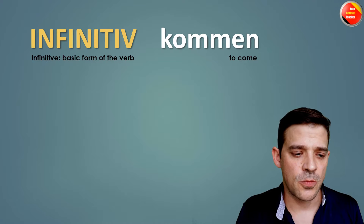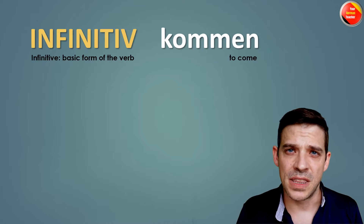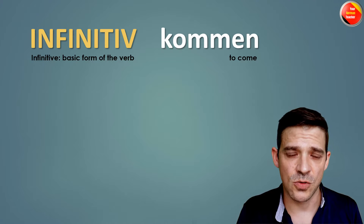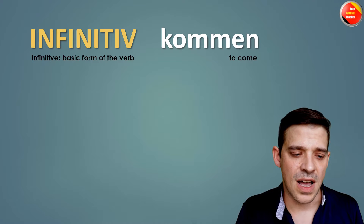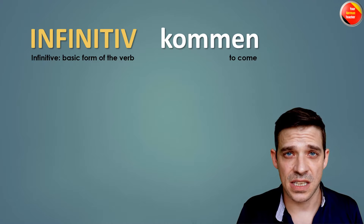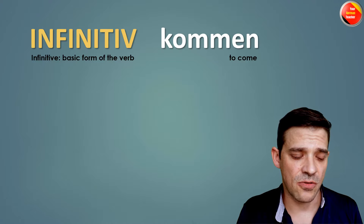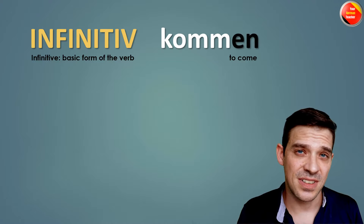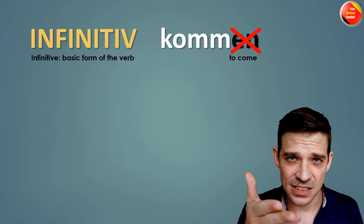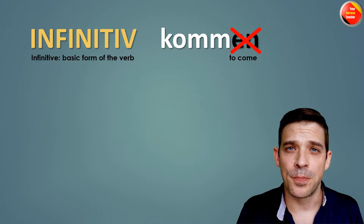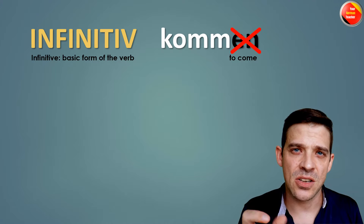The first verb we start with is 'kommen'. Kommen in English is 'to come'. So how do you build the conjugation of regular verbs? What you do is you drop the '-en' — you drop it — and then you have 'komm'. Komm is the base of the verb.